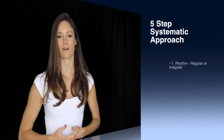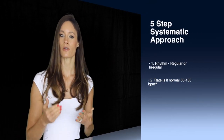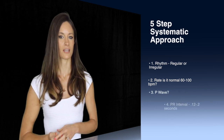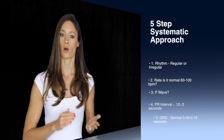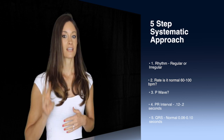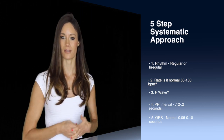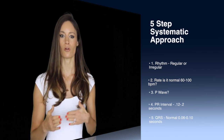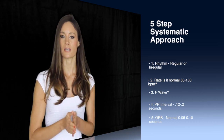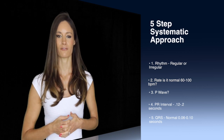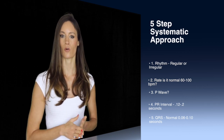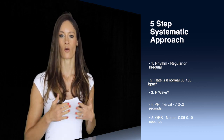The basis for understanding the normal rhythm or electrical activity in the heart is essential. Let me show you a systematic approach that I use — a 5-step system. Step 1: is the rhythm regular or irregular? Step 2: is the rate normal or between 60 to 100 beats per minute? Step 3: is the P wave present? Step 4: is the PR interval normal — between 0.12 and 0.2 seconds? And finally, Step 5: is the QRS normal — between 0.06 and 0.1 seconds?